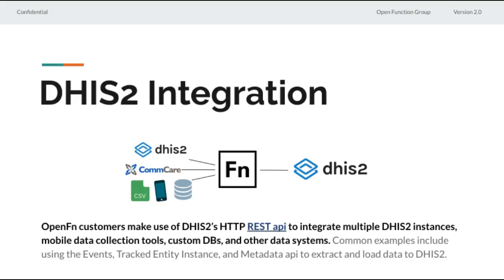With DHIS2 specifically, when we connect with DHIS2 using OpenFunction, we access DHIS2's REST API. So any data that is accessible through the API, we can access from a DHIS2 instance. That includes data like events, tracked entity instances, data elements, as well as metadata.